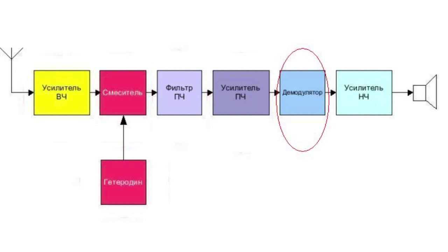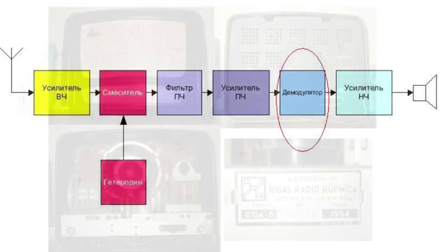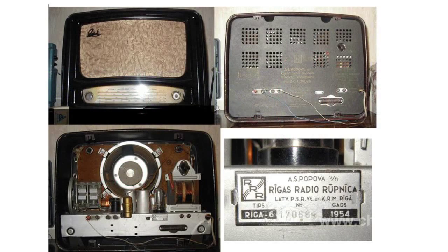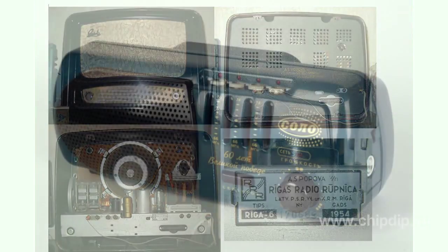The intermediate frequency signal is then transmitted to the demodulator, which reconstructs the audio signal. For conventional receivers of long, medium and short wave ranges, the intermediate frequency value is 455 or 465 kHz. In the VHF range, 6.5 or 10.7 MHz. The advantages of a superheterodyne receiver are a small number of tunable circuits, improved amplification due to the additional amplification of intermediate frequency, and it is also highly selective.